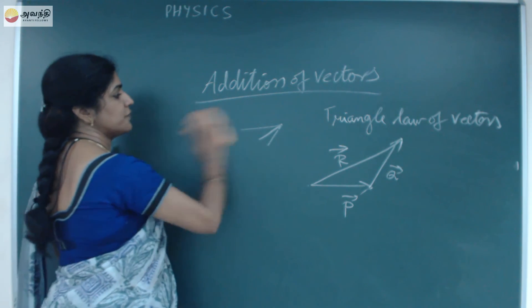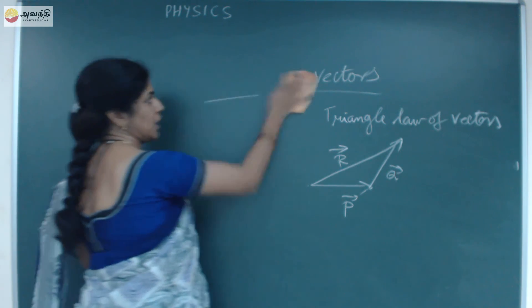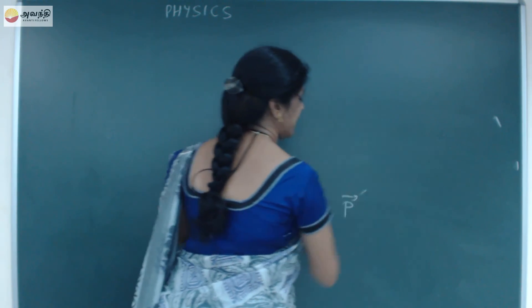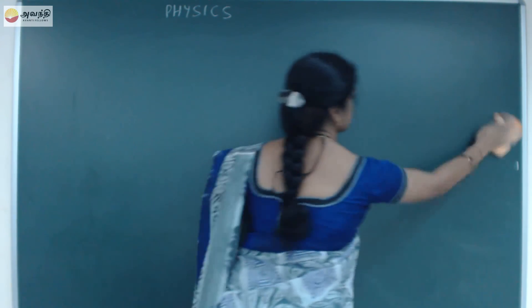In the Parallelogram Law of vectors, we are going to find out the resultant and the angle. This is very important — it's a 10-mark question.